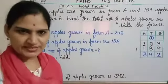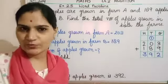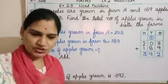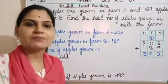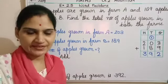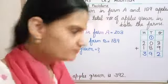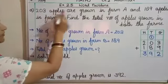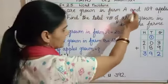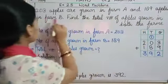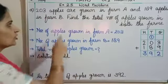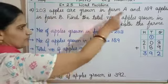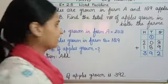In today's exercise we will do two word problems: A part and C part. A part ka solution A page pe karna hai aur C part ka next page pe start karna hai. Let us read the word problem: A part — 203 apples are grown in farm A and 189 apples are grown in farm B. Farm A mein 203 apples, farm B mein 189 apples grow ho rahe hai.